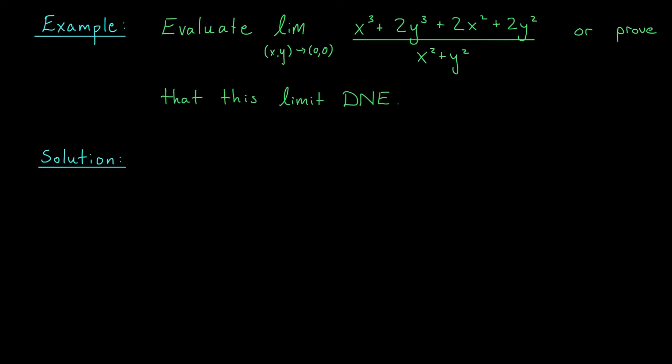Okay, for our second example, I have a really gross-looking function. I either want to evaluate this limit, if it exists, or prove that the limit in fact doesn't exist. Step one here is don't be scared. I know this looks a little complicated, but we're going to approach it just like we did the last problem — start by checking the limit along a few simple paths to the origin. I'm going to go ahead and look at straight lines y equals mx through the origin.